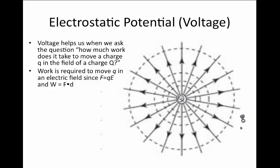Work is required in this case because there is going to be a force. The charge capital Q creates an electric field, and in the presence of that electric field, this little charge q will feel a force — q times the electric field value. Work will be required when we move an object a distance d in a force F. These are both vectors, and so this is a dot product.